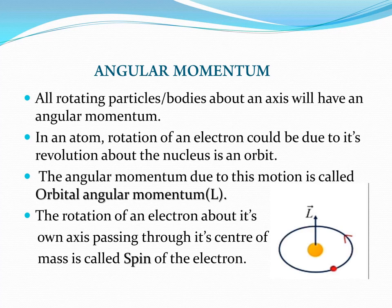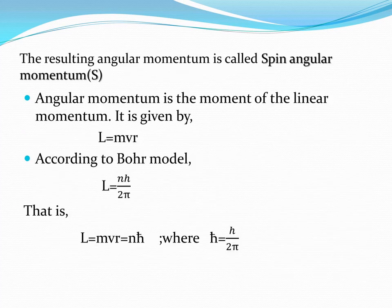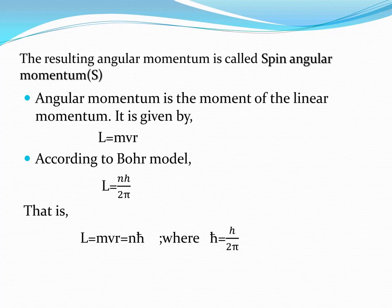We denote L as the orbital angular momentum of the electron revolving around the nucleus. We also consider the spin of the electron, and the angular momentum arising due to this spin is called the spin angular momentum. The orbital angular momentum is given by L equals mvr, and according to Bohr's model, L equals nh divided by 2pi. Therefore L equals mvr equals n times h-cross, where h-cross equals h divided by 2pi.